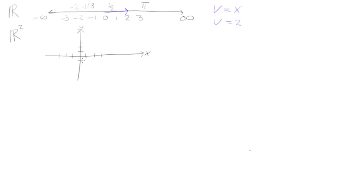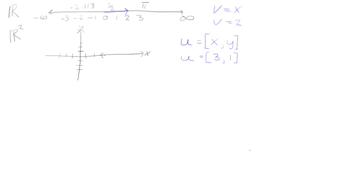We have 1, 2, 3 all the way up to infinity and down to negative infinity. Now if we want to draw a vector in two dimensions, let's call it vector u. To describe any vector in R2, we'll have to have an x component and also a y component. So say we want to draw the vector u equal to (3, 1) — that means we go 1, 2, 3 for our x and 1 for our y, so that point would sit right there.